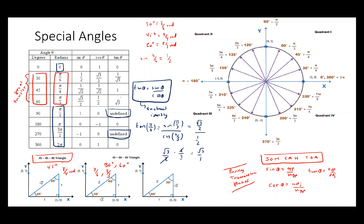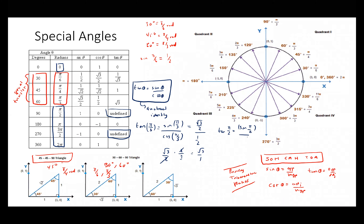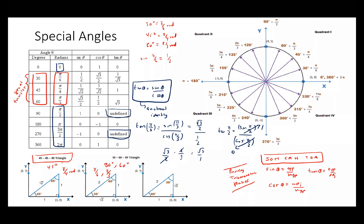Why is tan 90 degrees undefined? Tan 90 degrees is π/2 radians. Tan π/2 equals sine π/2 divided by cosine π/2. Cosine π/2 is 0 and sine π/2 is 1, giving 1 over 0. Any fraction with a denominator of 0 is undefined, so tan 90 is undefined. The same applies to 270 degrees.